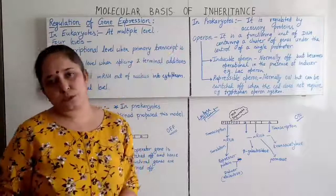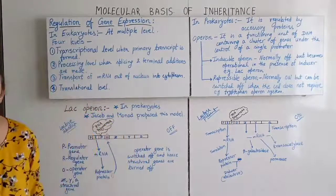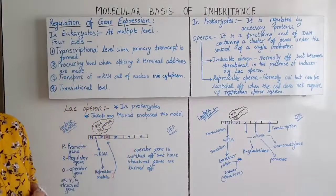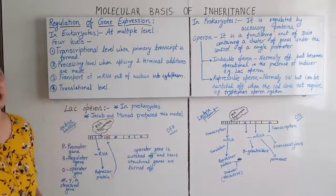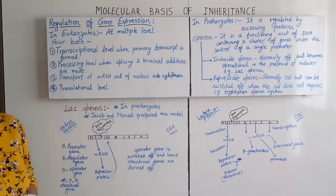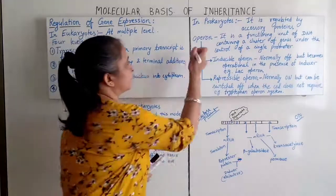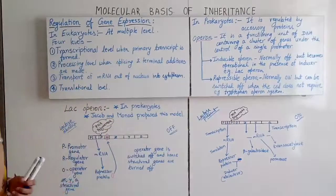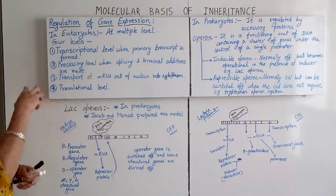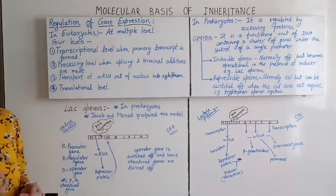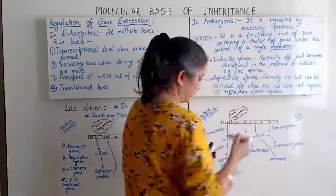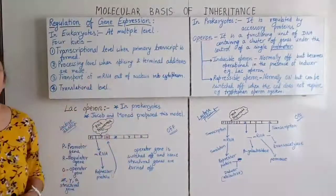In the case of prokaryotes, gene expression is regulated by accessory proteins — a few proteins that control gene expression. There is one term: operon. It is a functioning unit of DNA that contains a cluster of genes, all under the control of a single promoter. This is called an operon.